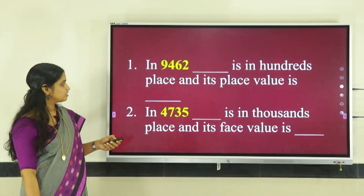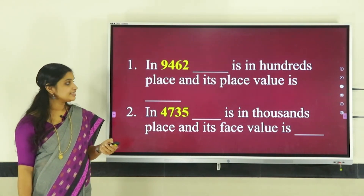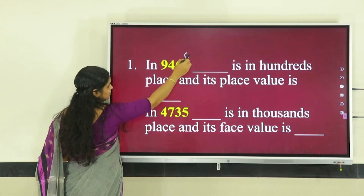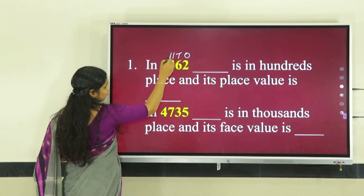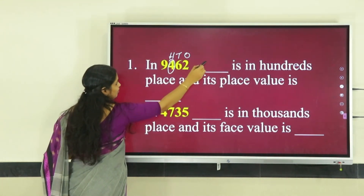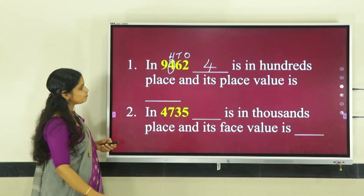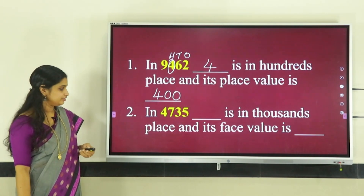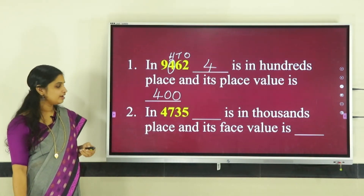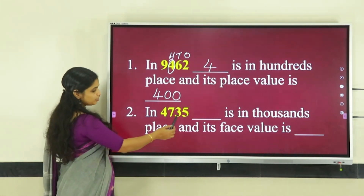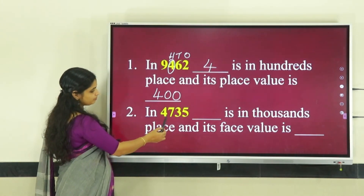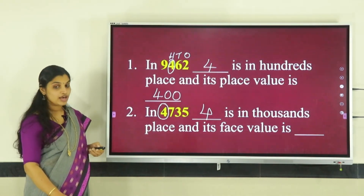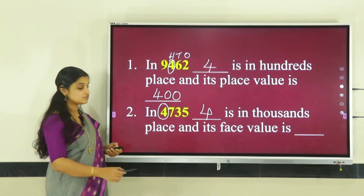Now let us solve some questions. In nine thousand four hundred and sixty-two, which digit is in the hundreds place? Two is in the ones place, six is in the tens place, and four is in the hundreds place. So four is in the hundreds place, and its place value is four hundred. In four thousand seven hundred and thirty-five, which digit is in the thousands place? Five is in the ones place, three is in the tens place, seven is in the hundreds place, and four is in the thousands place. The face value of four is four itself.